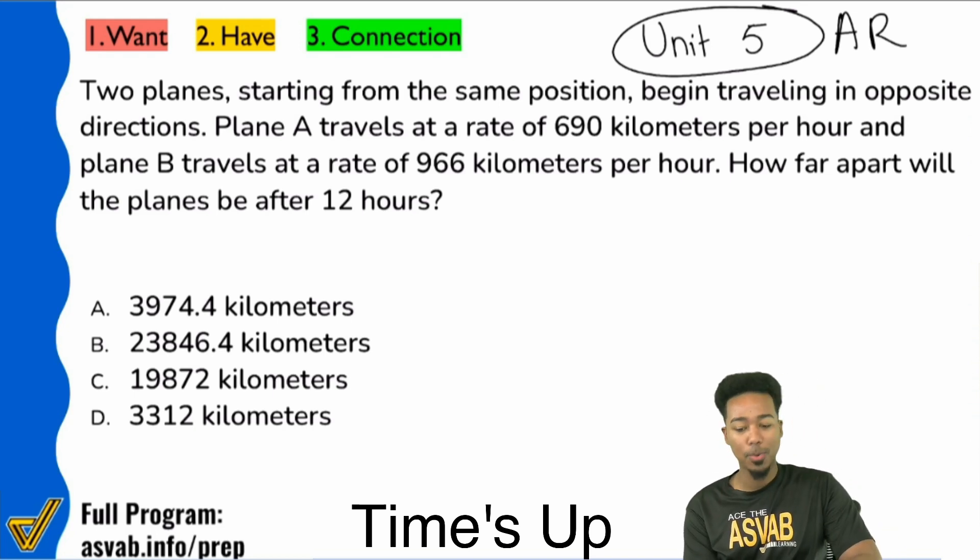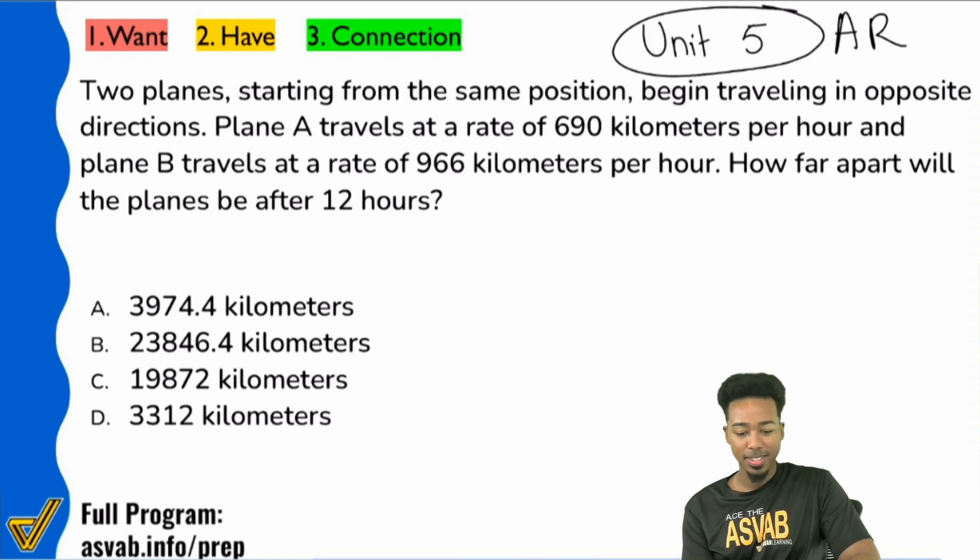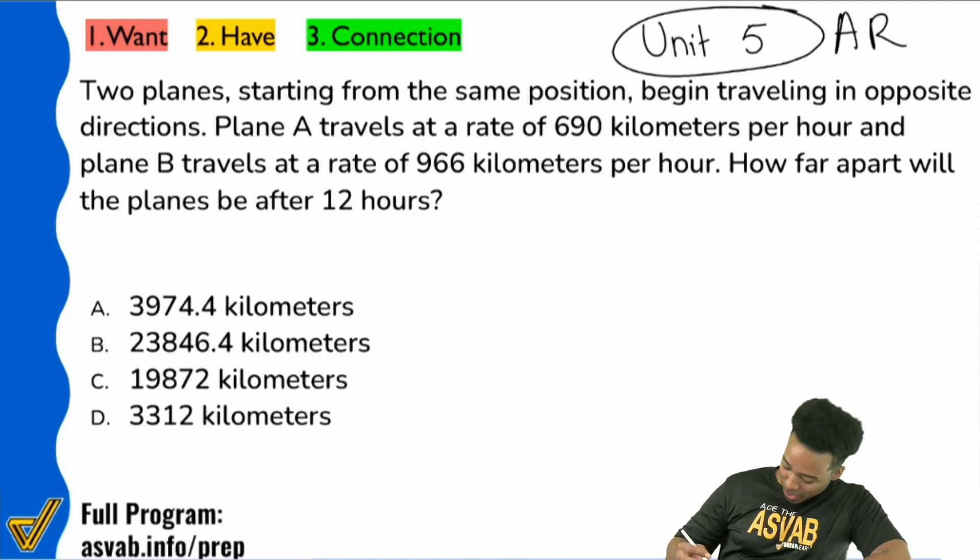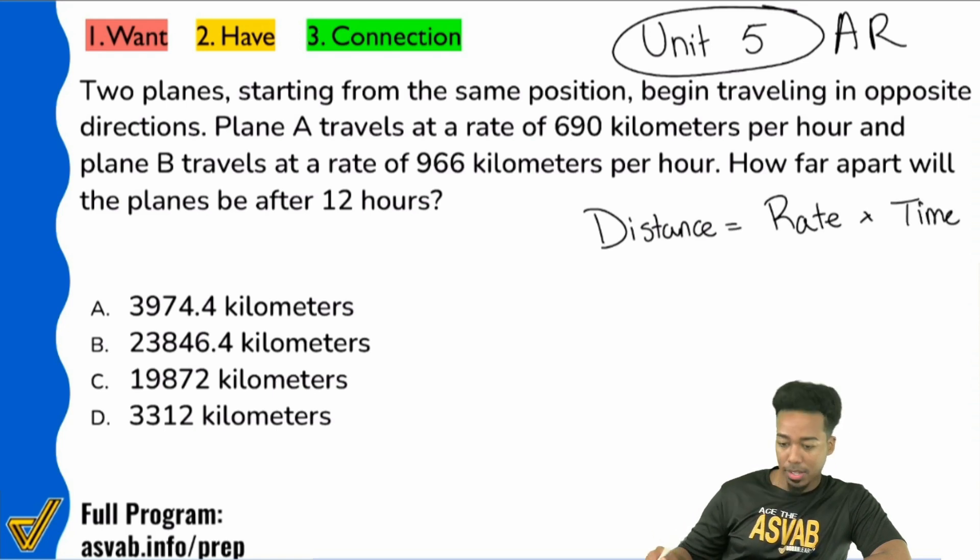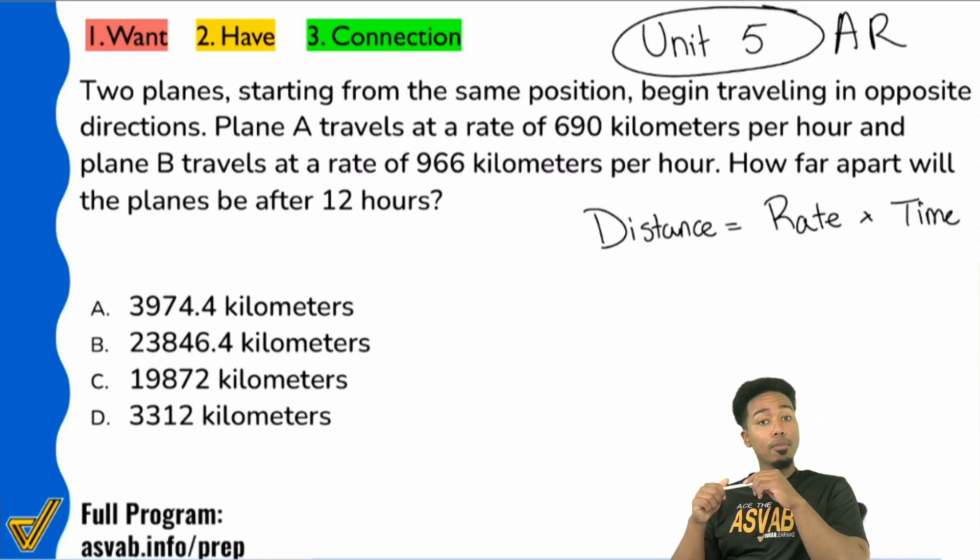This is a what type of question. Yeah, this is distance, rate, time. Exactly. So this is a distance, rate, time problem. Distance equals rate times time. Sounds good. Now, here's the thing, let's look at the information we have.